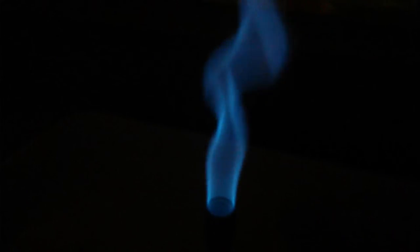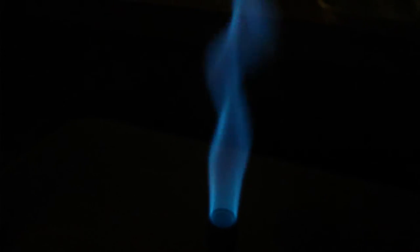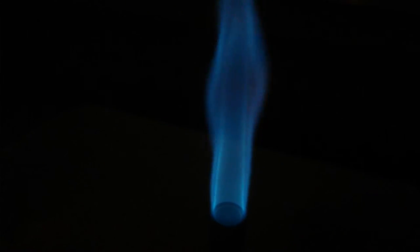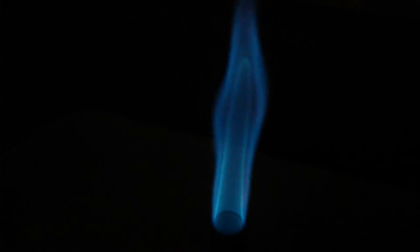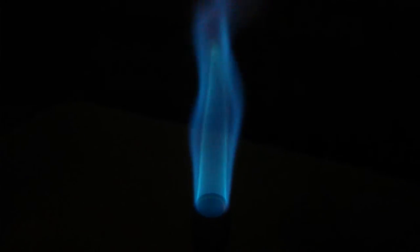If you open at the base of the Bunsen burner, the opening, so it receives more oxygen, you see how it turns bluer and the thing that you want when you are flaming your loop is this flame that is blue.